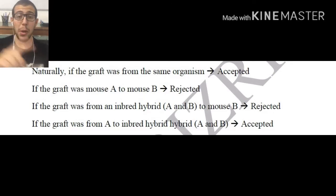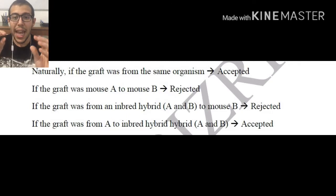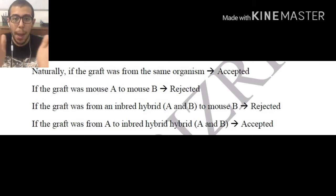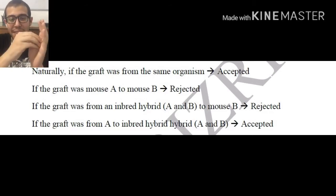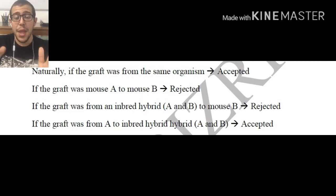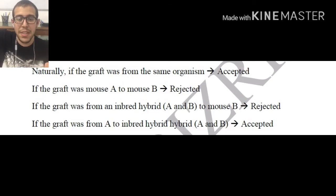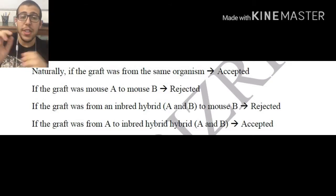If the graft was from mouse A to mouse B, then it is definitely going to get rejected. Now here is the tricky part: if the graft was from an inbred hybrid A×B — so we're taking skin cells from a hybrid that has both MHC-A and MHC-B — and we add this graft to strain B, it is going to get rejected. Mouse B does have the MHC of the B part, however it does not have the A part. So mouse B is going to elicit a response against the MHC-A part of the hybrid, and it is going to get rejected.